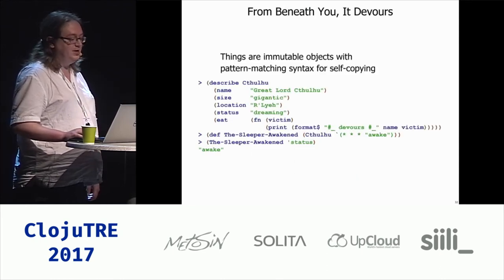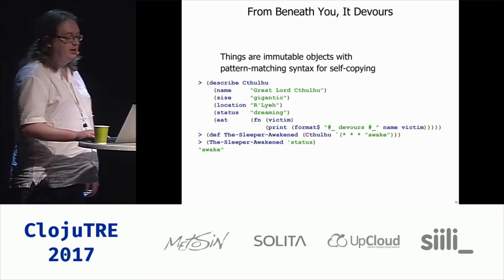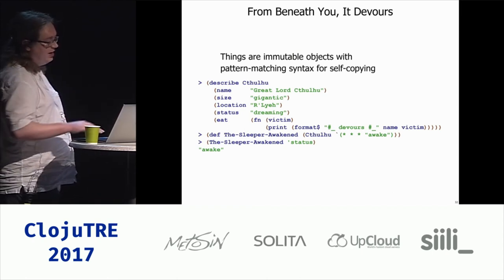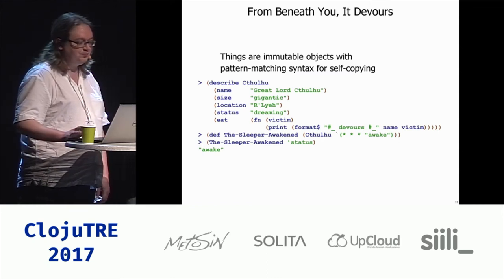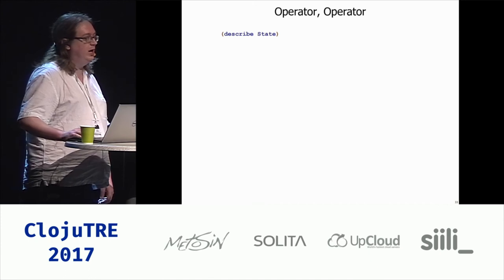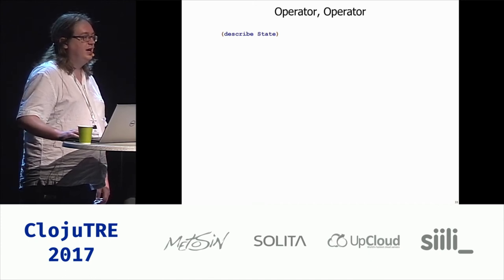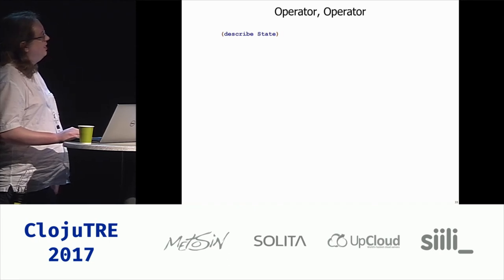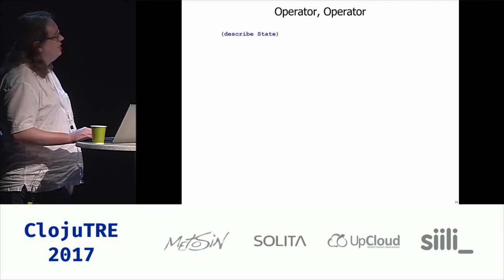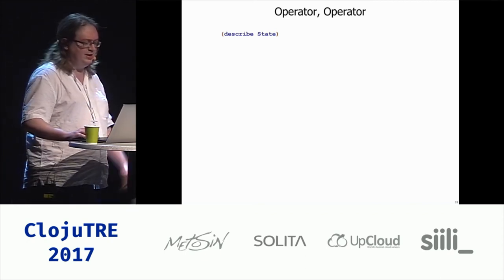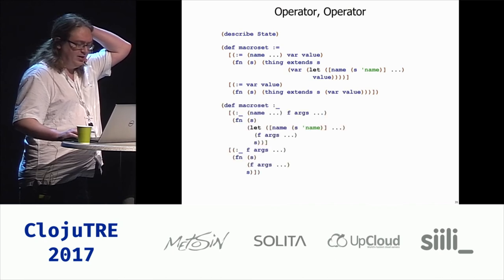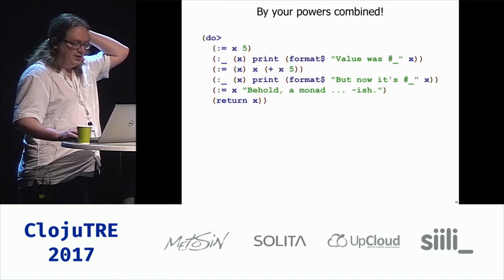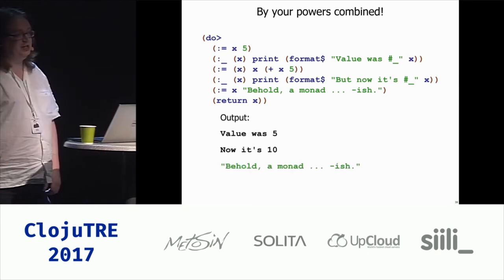Things are immutable objects with pattern-matching syntax for self-copying. We can describe a thing, and the original iteration of that thing is immutable — it can never be changed, but we can copy it with the helpful little syntax you see at the bottom. Then I started thinking: we've got these for loops, and we can stick anything we want in that carry value, and now we have these objects which have names containing values. I was spending a lot of time in Haskell, so suddenly we have a little bind operator, a pass operator, a return operator, and one more little helpful macro, and suddenly we have do notation implemented with for loops.